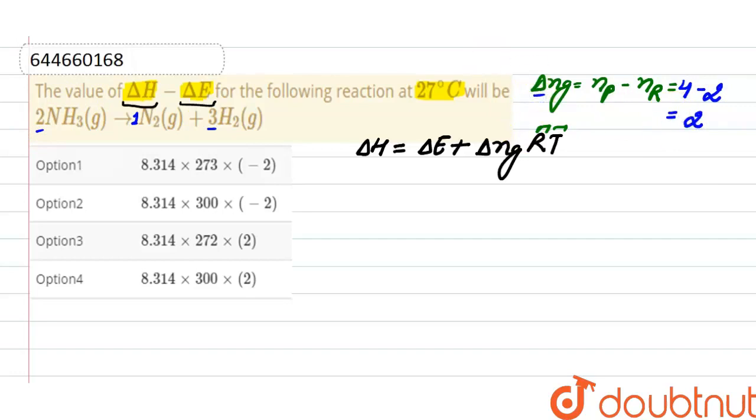Putting the values here, ΔH minus ΔE equals 2 times RT. For 27°C, that is 300 Kelvin, so the temperature here is 300, and the correct option...